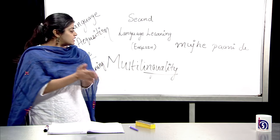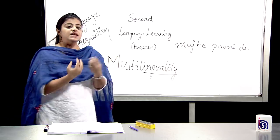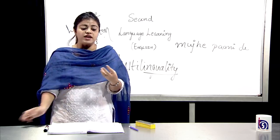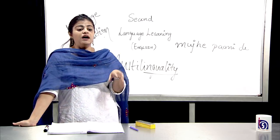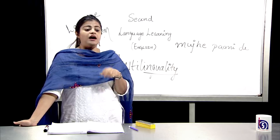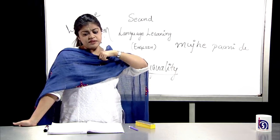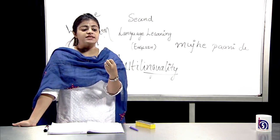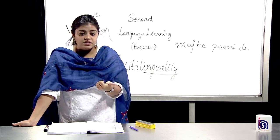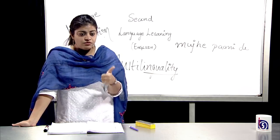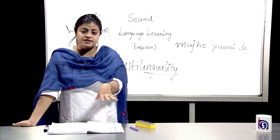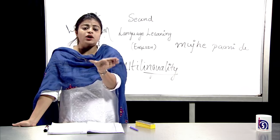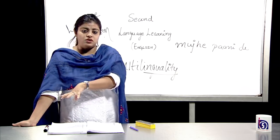If parents are to correct their children, they have this tendency to correct them on the basis of truthfulness. For example, if a child says 'Kal Mangalwar hai,' the parent would probably correct the child saying that tomorrow is Monday, not Tuesday. But they won't focus on the grammar or the structure of the sentence. The focus of the parent is on the truthfulness of the content, not on the grammatical structure.